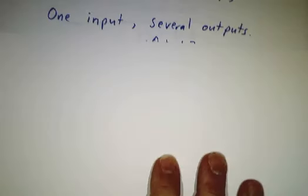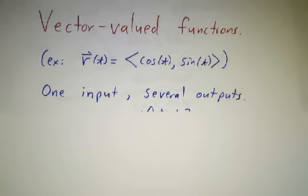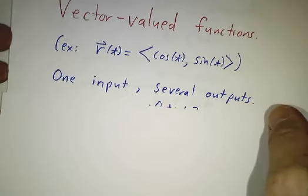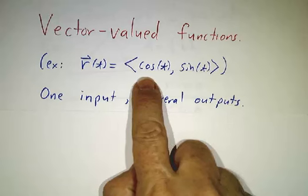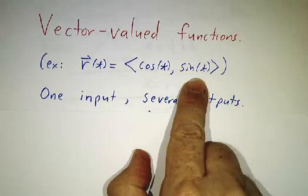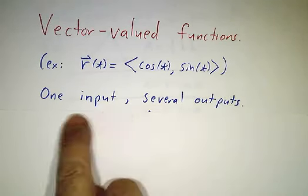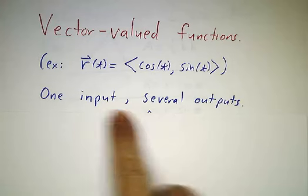Then we advanced to vector-valued functions. Now with vector-valued functions, we still only had one input, but we had several outputs. So if you had the vector-valued function cos t, sin t, well, that was one input at the time and several outputs.